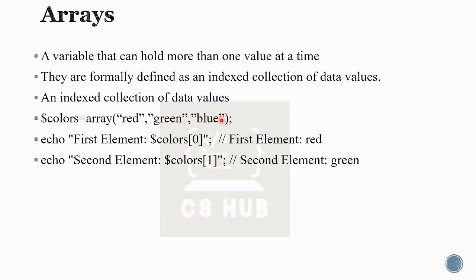So with negative indexing: -1 is the last element, -2 is the second to last, and -3 is the first. You can access array elements using both positive and negative indices.